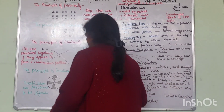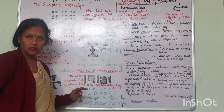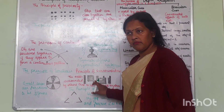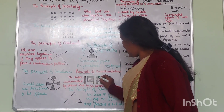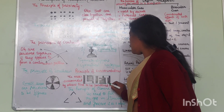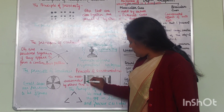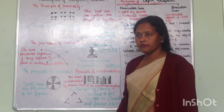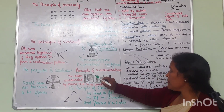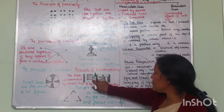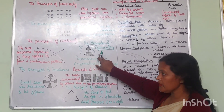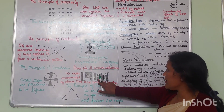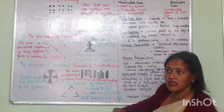Now, the principle of surroundedness. What are you looking at — five figures? Will you perceive it as five figures? Yes. But I am covering it now. What is it now? We perceive it as 'LIFT' because there is surroundedness. When we surround something, it becomes a separate thing.